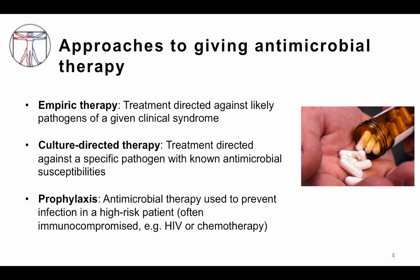Thinking about how you give antimicrobial therapy, there are three main strategies. The first is empiric therapy — this is when you provide antibiotic therapy directed against the most likely pathogens for a given clinical syndrome. For example, a patient with community-onset pneumonia: the most common pathogens are Streptococcus pneumoniae, Haemophilus influenzae, and Mycoplasma, and you pick a regimen to cover all of those — for example, levofloxacin, a fluoroquinolone.